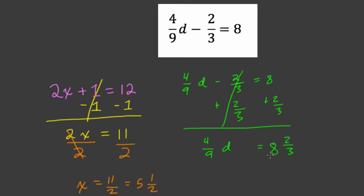We have 8 wholes and 2 thirds. So 8 wholes is like 24 thirds. 2 more thirds is 26 thirds. Or you could think 3 times 8 is 24 plus 2 is 26 equals 4 ninths d.